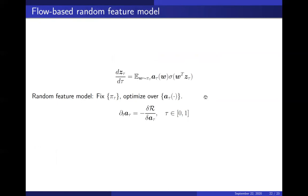The continuous approach also gives rise to new models. For example, we can fix the distribution of the inner parameter w in the ODE right-hand side and use only the function a as the free parameter. This looks like putting a random feature model into the right-hand side of the flow, so the parameters are a one-parameter family of functions a(tau). This new model has been tested and performs reasonably well, though more experiments are needed.